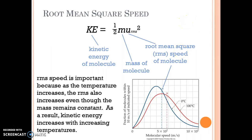The RMS speed is important, because as the temperature increases, the root mean square speed is going to increase, even though the mass remains constant.